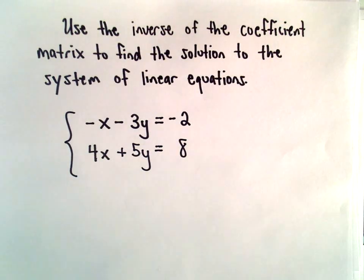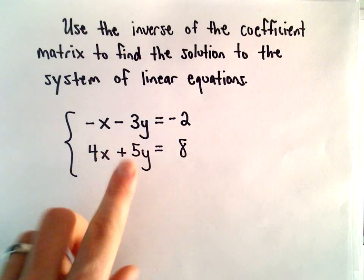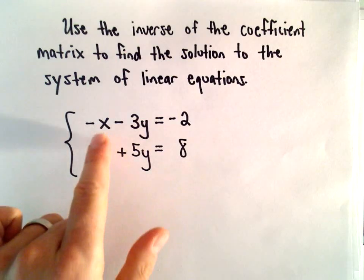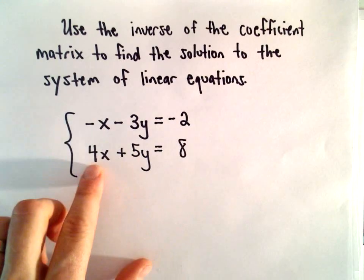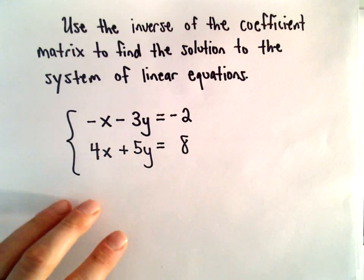Okay, here we're going to use the inverse of the coefficient matrix to find the solution to the following system of equations. We've got negative x minus 3y equals negative 2, 4x plus 5y equals 8.